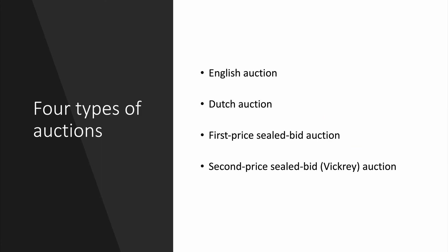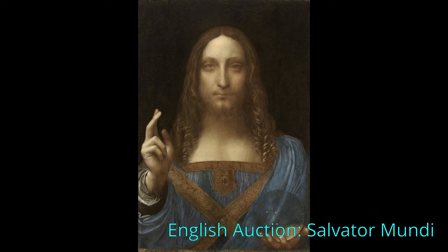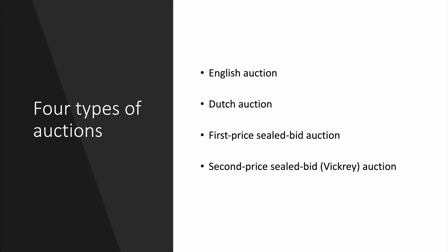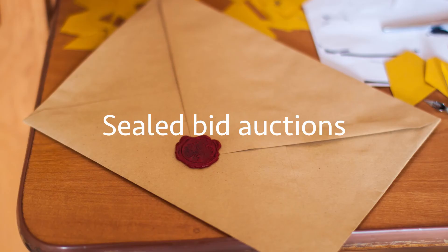There are several auction formats. As you have seen in the YouTube videos, the auction of Leonardo da Vinci's painting was an English auction; the sale of tulips and fresh flowers in the Netherlands — those are Dutch auctions. We'll also talk about two other types: the first price sealed bid auction and the second price sealed bid auction.